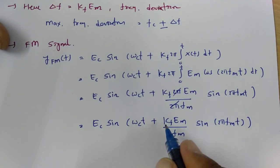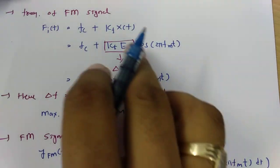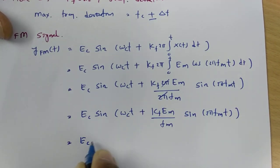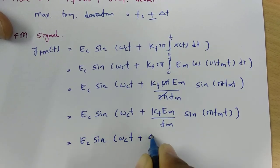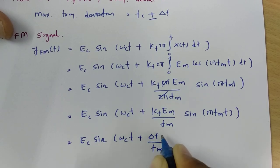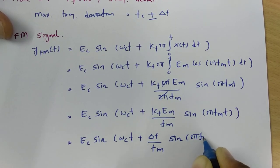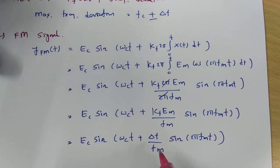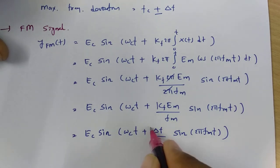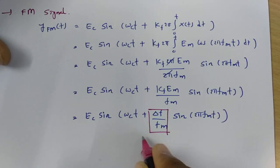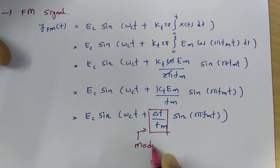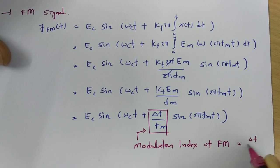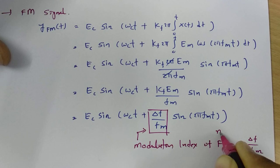Here, Kf·Em is the frequency deviation delta f. Placing that in, we have Ec·sin(ωc t + (delta f / fm)·sin(2π fm t)). The ratio delta f divided by fm, where delta f is frequency deviation and fm is the maximum frequency of the modulating signal, is the modulating index, denoted Mf.